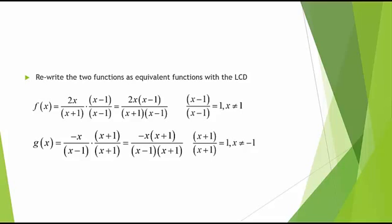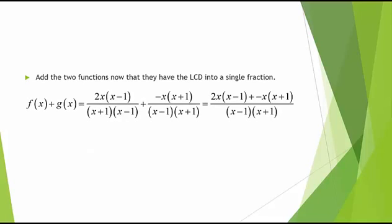Thus, we have rewritten f(x) and g(x) with the denominator being the least common denominator, or LCD. Now we add the two functions: f(x) plus g(x), where f(x) is 2x times x minus 1 divided by x plus 1 times x minus 1. We add the two fractions to get a single fraction: 2x times x minus 1, plus negative x times x plus 1, divided by the LCD, which is x minus 1 times x plus 1.